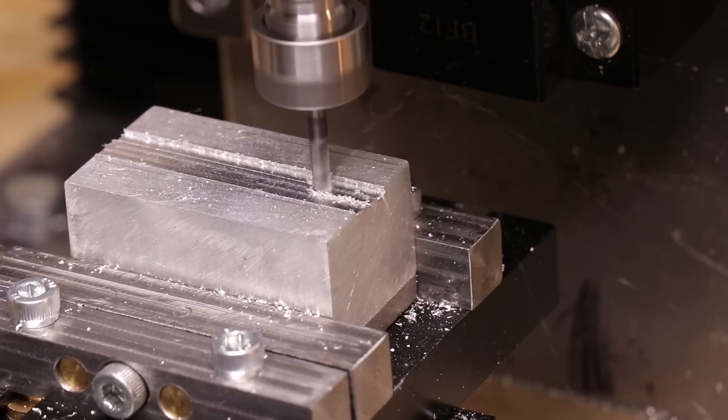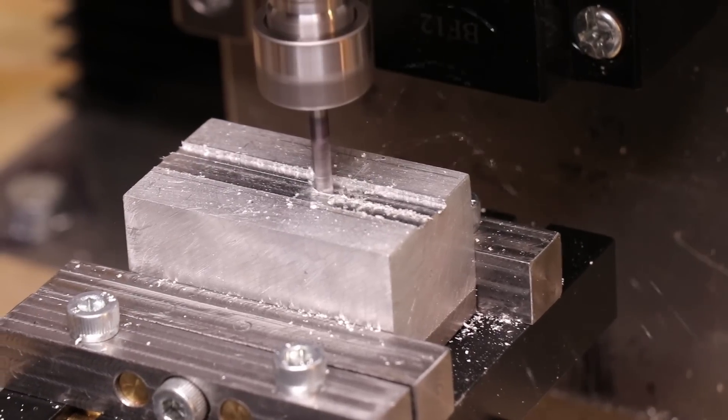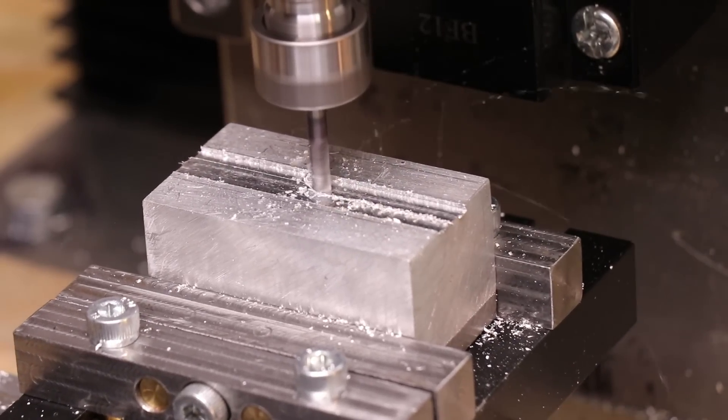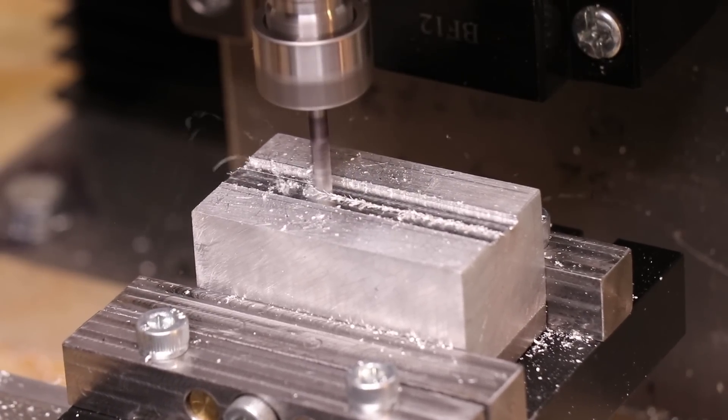A mill, however, holds and spins the cutter, and moves that into a stationary workpiece. This, coupled with the extra axis of movement, allows you to make really accurate square cuts.